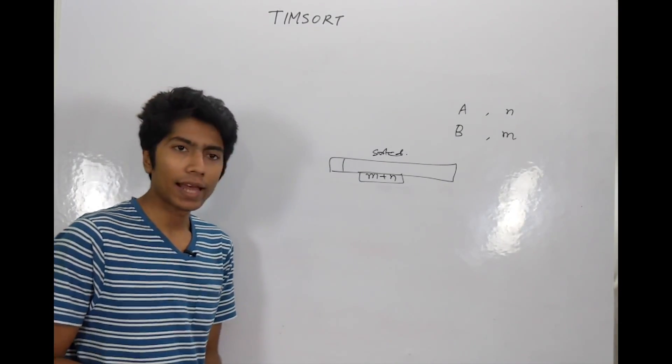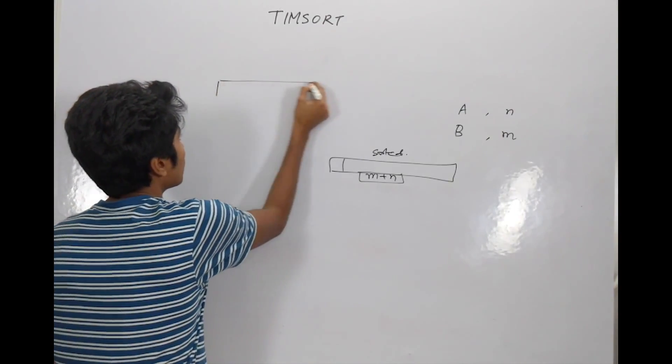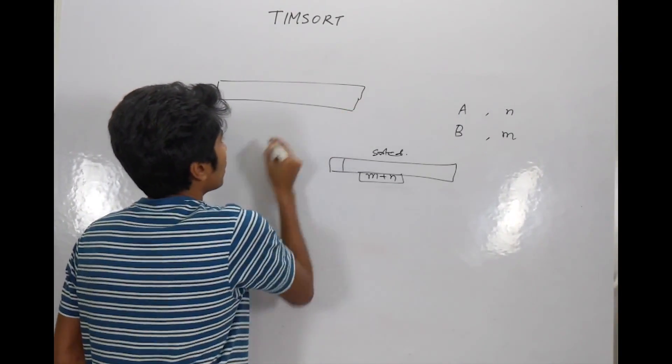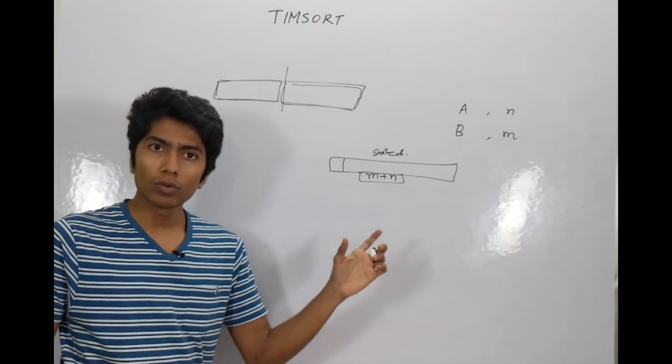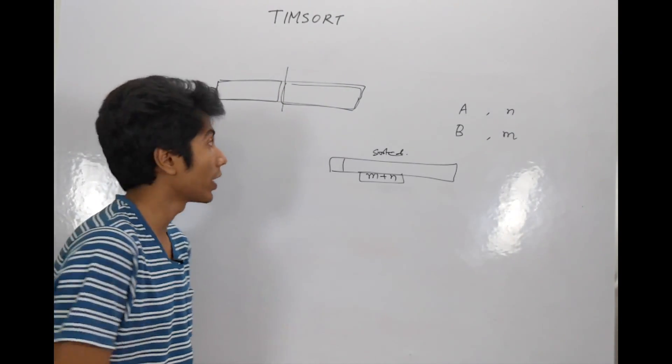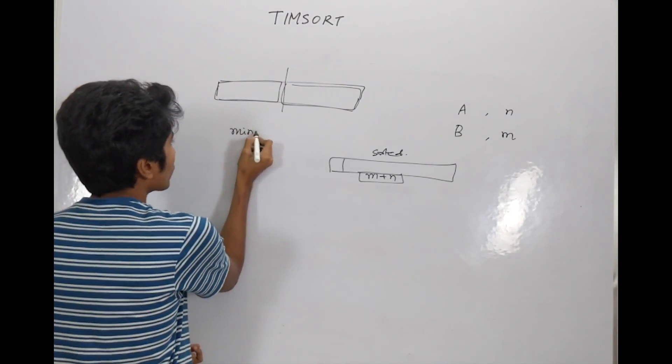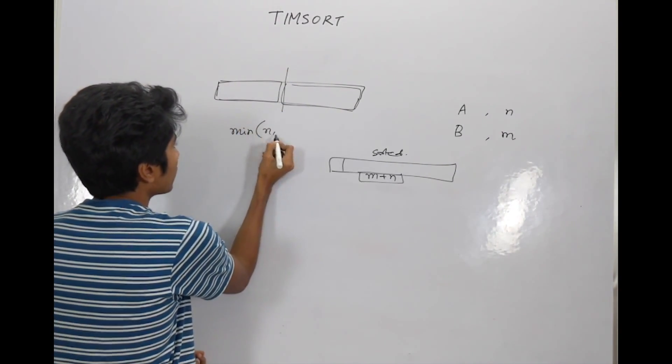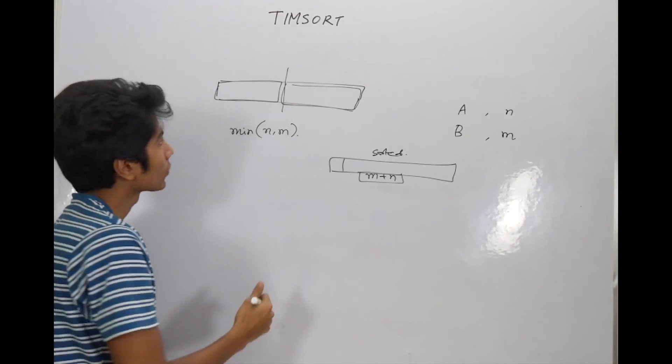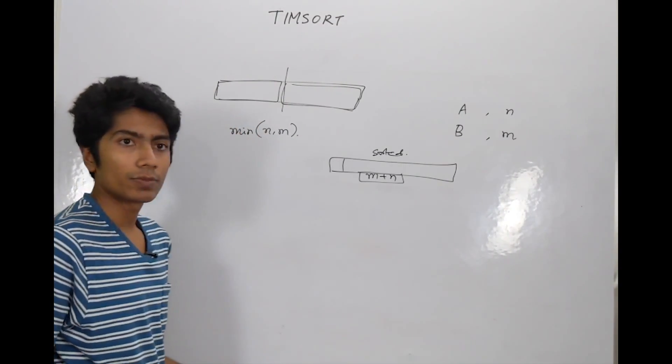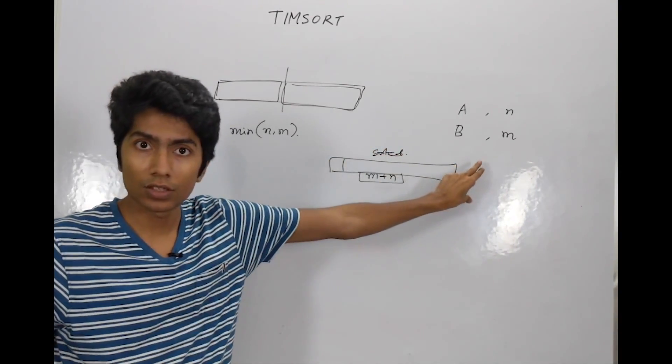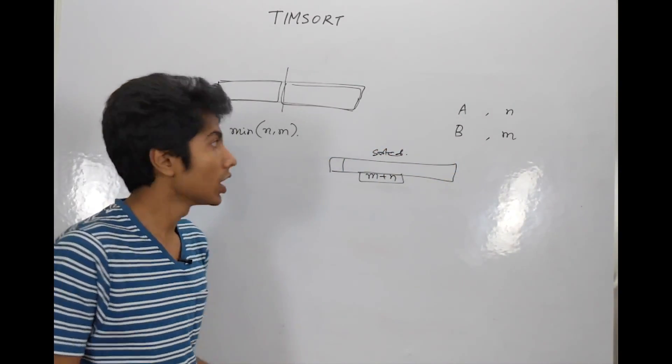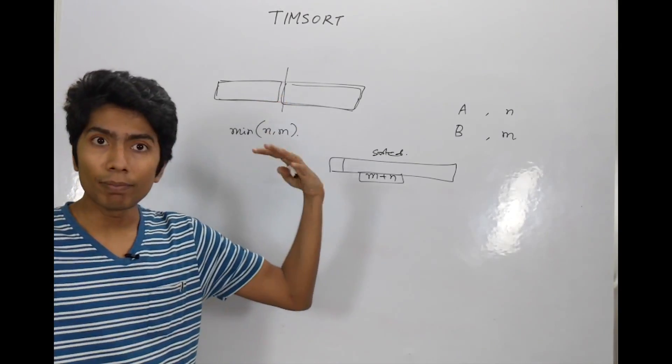But imagine an array which has been given to you as this large. Now you have two chunks in it, chunk one and chunk two. Over here, if you're trying to do a merge sort, the maximum space, extra space that you require is the minimum of chunk one size N and chunk two size M. The reason for this is because over here you need a temporary space to push in all the elements when you are actually merging two arrays. Over here you are going to be merging in place.